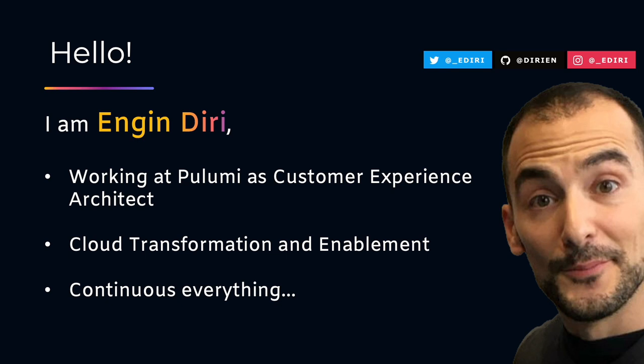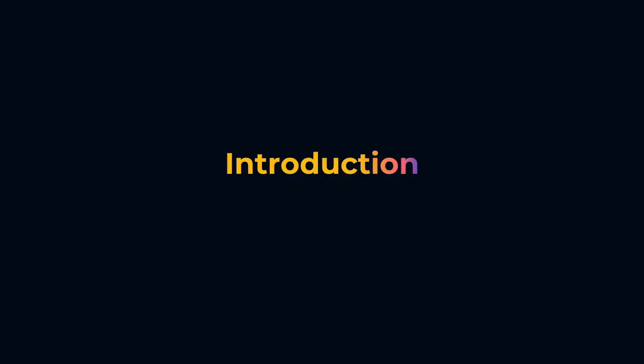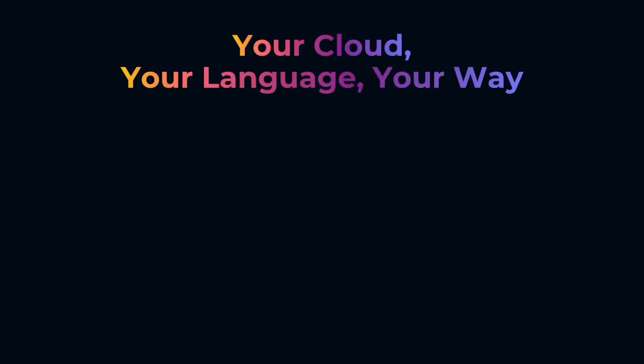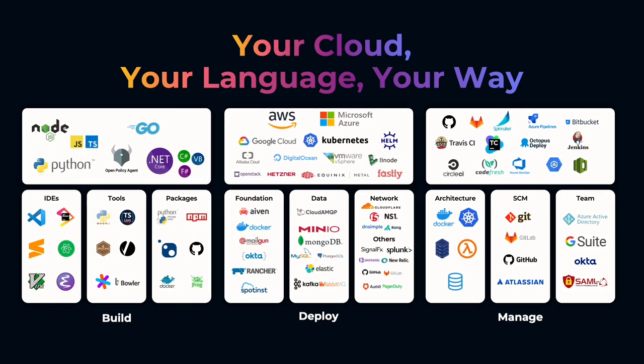Let's make an introduction about Pulumi for people who may not know it. We define Pulumi in three different pillars: the build area, the deploy area, and the manage area. In the build area, you may already see some familiar programming languages. In this case, we're going to talk about Python, but as you can see, Pulumi offers support for a much wider range of programming languages.